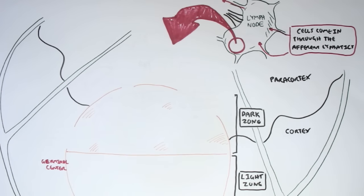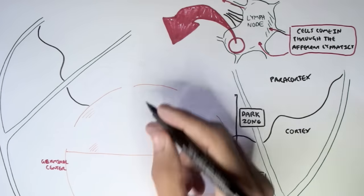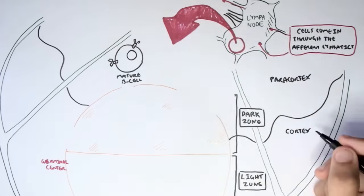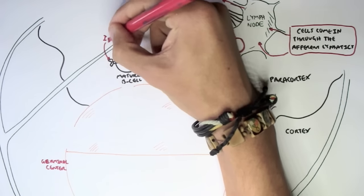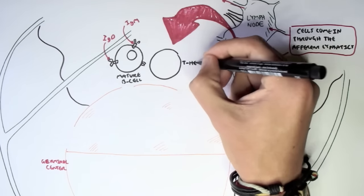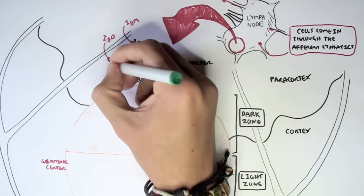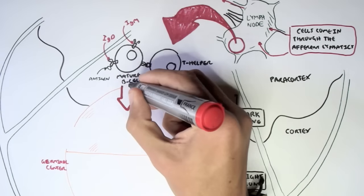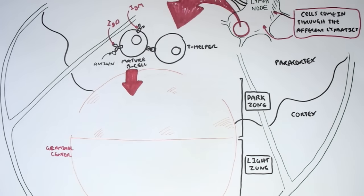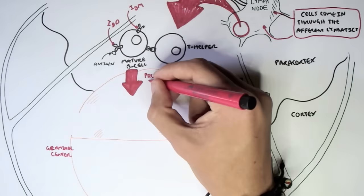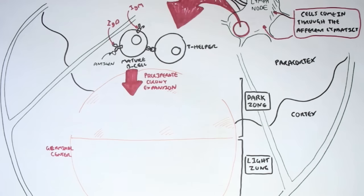The immature B cell, when it goes to the lymph node, becomes a mature B cell. At this stage, it can express not only IgM but also IgD antibodies. The mature B cell, usually abundant in the cortex, will move to the paracortex to get activated by T helper cells, or alternatively by an antigen of a pathogen or a follicular dendritic cell. When this mature B cell gets activated, it will move into the germinal center dark zone and begin to proliferate — a process called clonal expansion.